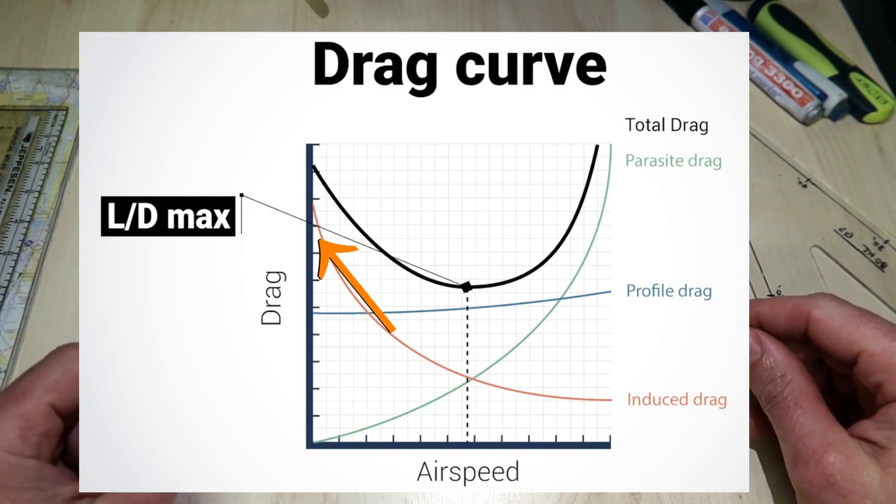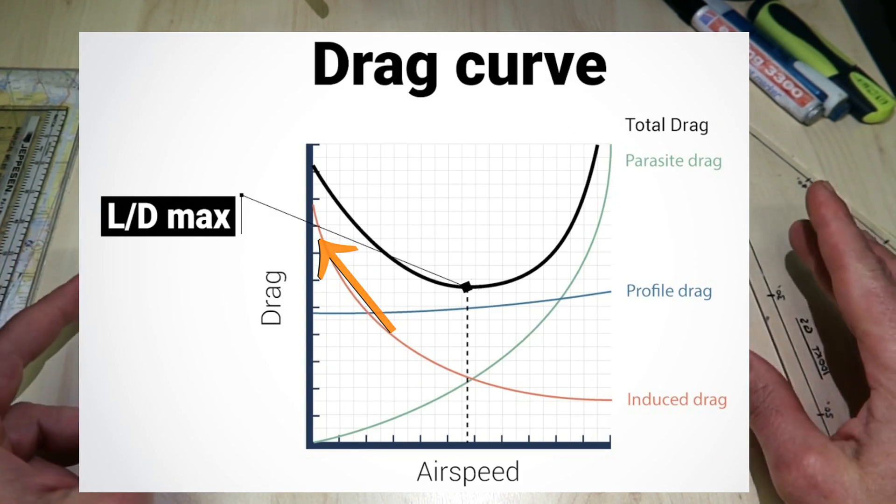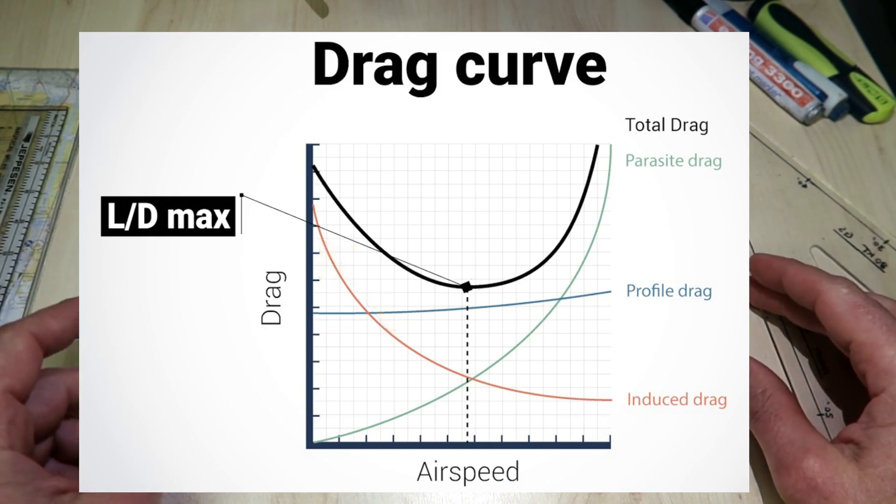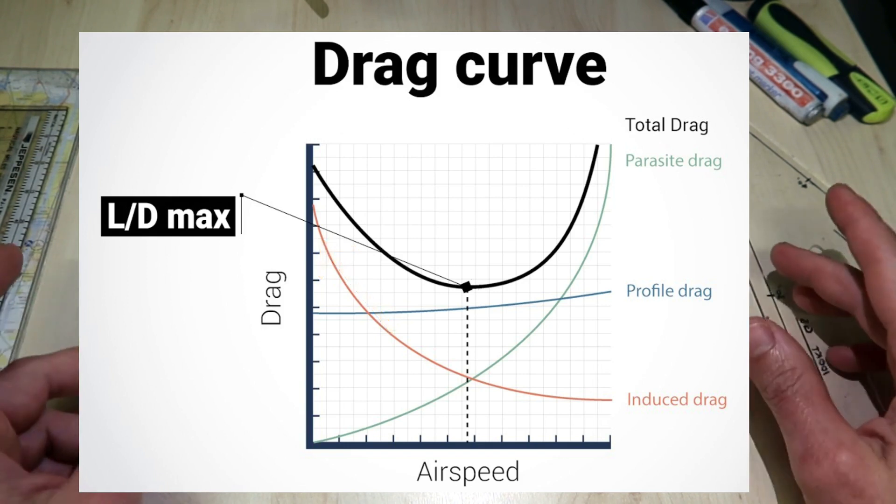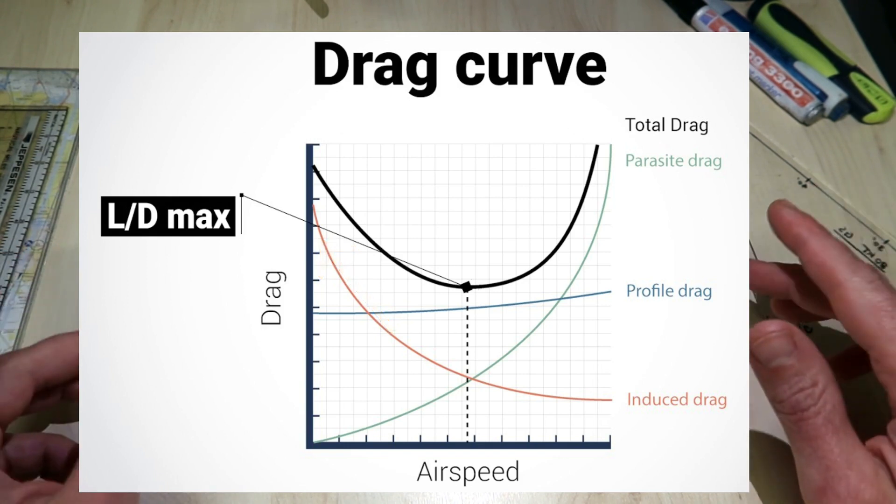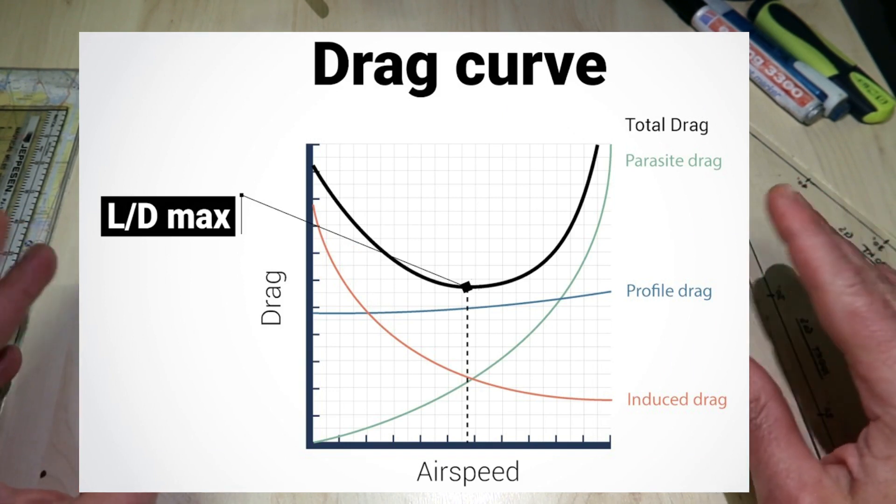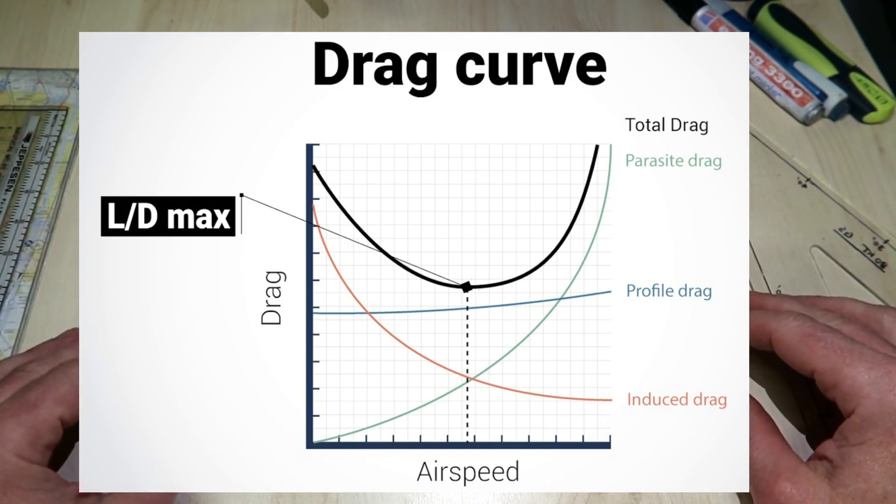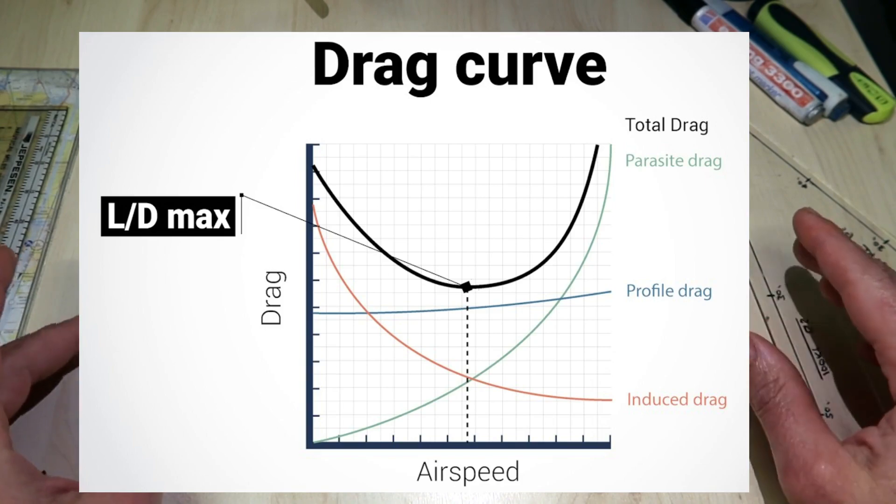The induced drag curve is not a smooth curve at the very lowest speeds because ground effect reduces the induced flow on takeoff. When induced drag is added to the diagram, it produces a total drag curve as shown.